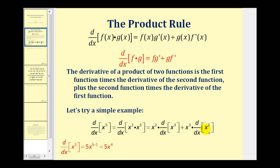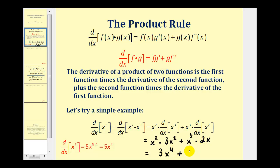So let's go ahead and find these two derivatives and simplify to make sure we still get five x to the fourth, which we know to be the derivative. We'd have x squared times the derivative of x cubed, which is three x squared, plus x to the third times the derivative of x squared, which is two x. This gives us three x to the fourth plus two x to the fourth, which does sum to five x to the fourth. This is a nice verification that the product rule does work.